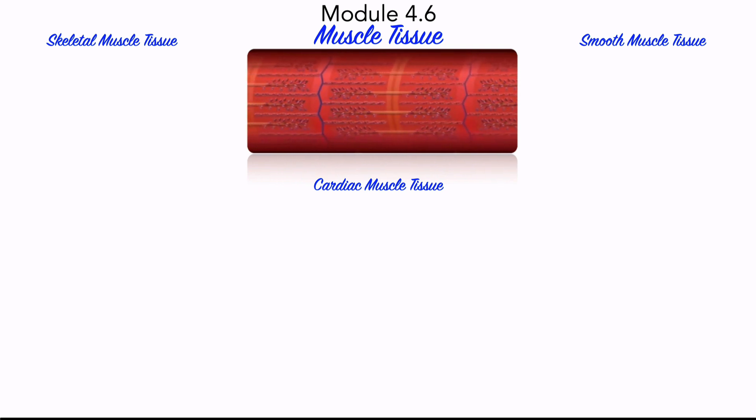In module 4.6 we present a brief cursory overview of muscle tissue. In module 7 we devote substantial time to examining in detail both the anatomy and physiology of muscle tissue. Here we'll focus on general characteristics rather than specific details which we will examine in module 7. Let's consider the general characteristics of the three muscle tissues of the human body now.